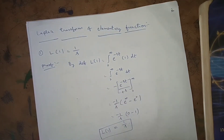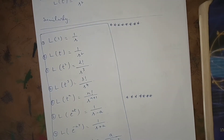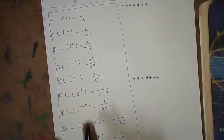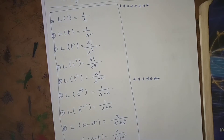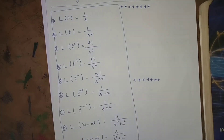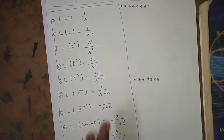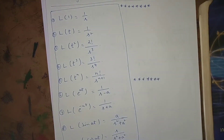Now, Laplace transform of elementary functions. All formulas have the left-hand side in terms of t and the right-hand side in terms of s. That means the function inside L is f(t), a function of t for positive values, and we are transforming these functions into f̄(s).